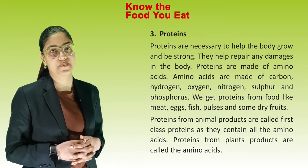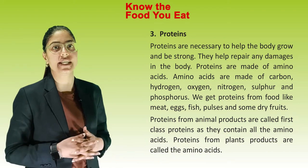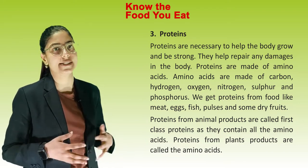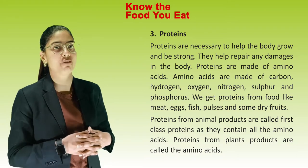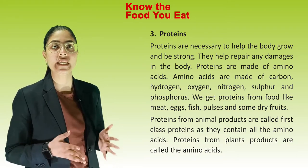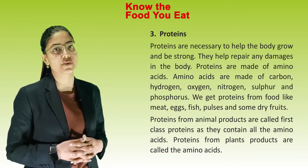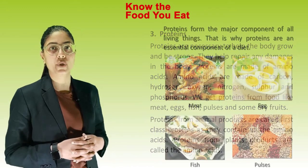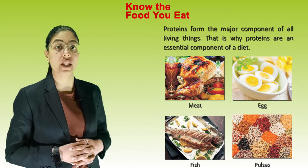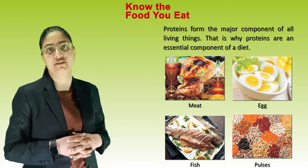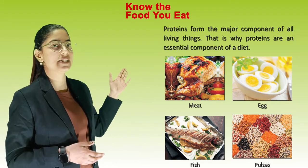Third one is proteins. Proteins are necessary to help the body grow and be strong. They help repair damage in the body. Proteins are made up of amino acids. Amino acids are made up of carbon, hydrogen, oxygen, nitrogen, sulfur and phosphorus. We need proteins from food like meat, eggs, fish, pulses and some dry fruits. Proteins from animal products are called first class proteins as they contain all the amino acids. Proteins form the major component of all living things, which is why proteins are an essential component of a diet.